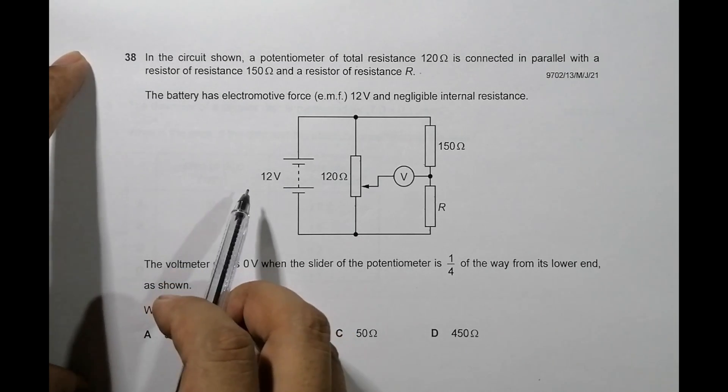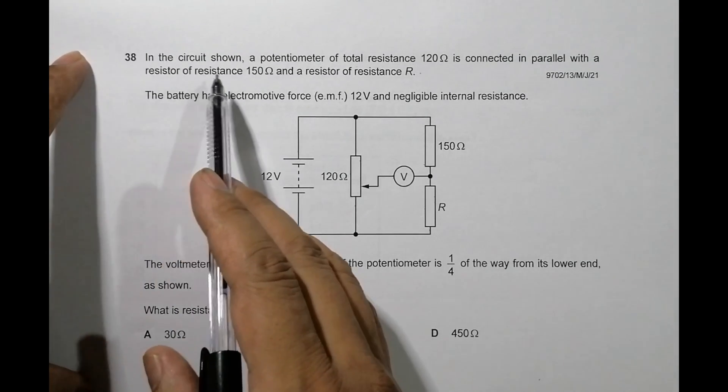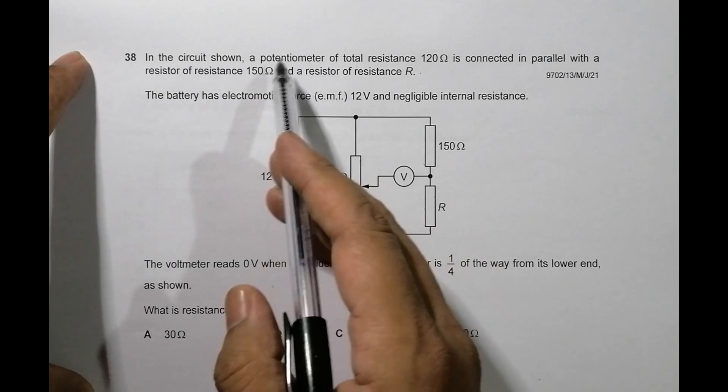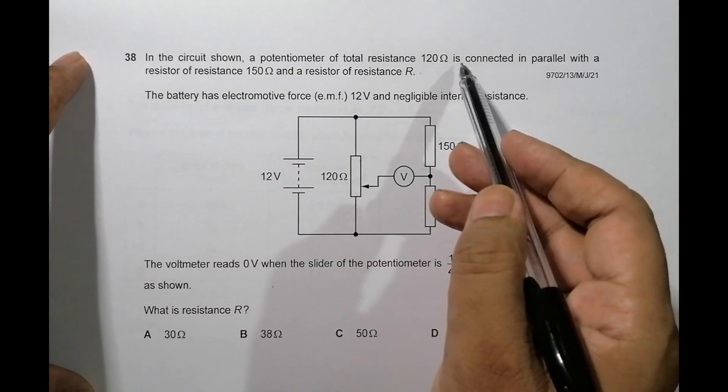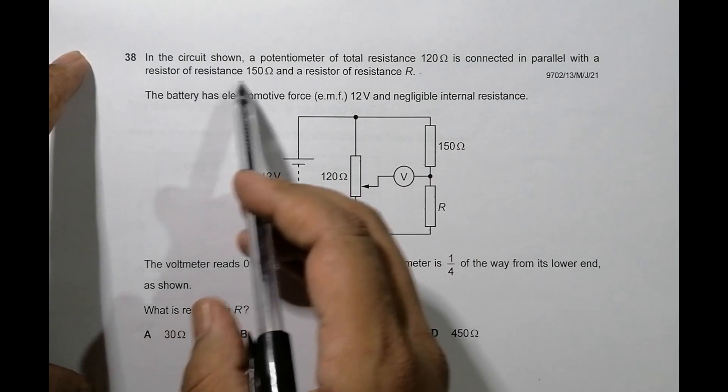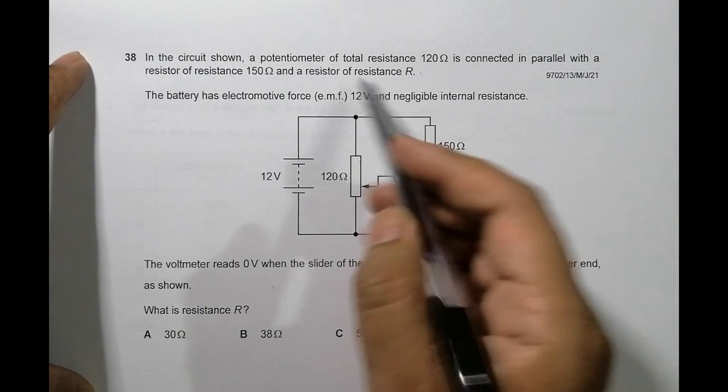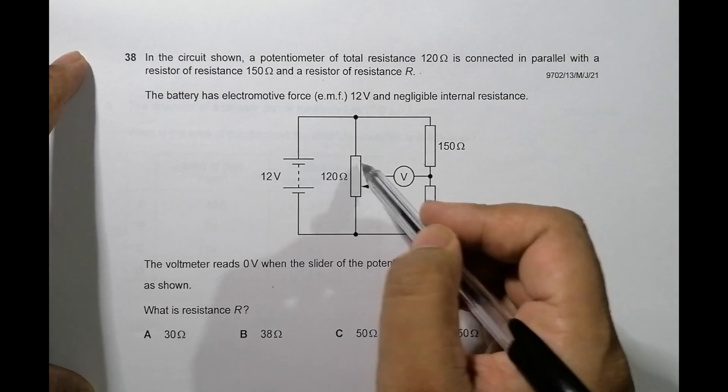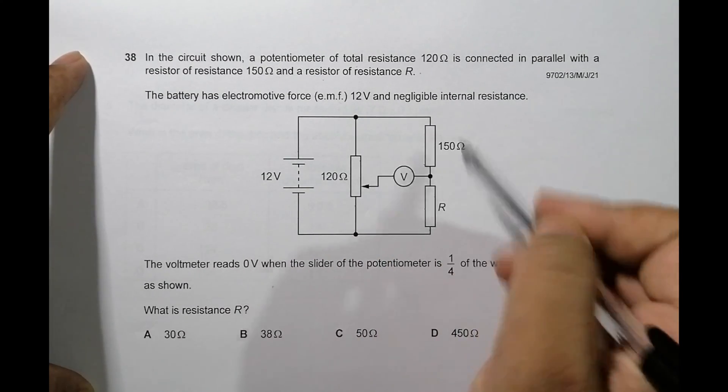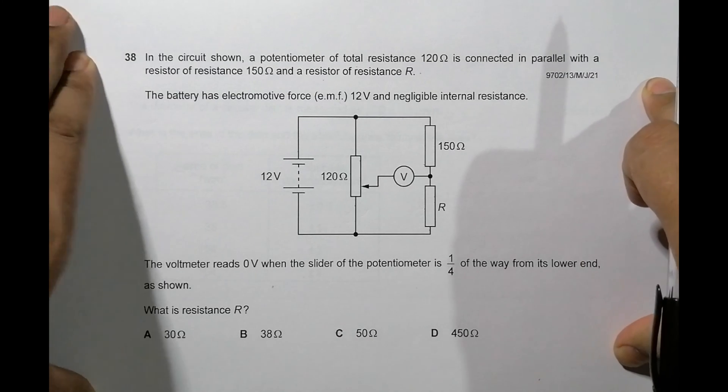It's concerned with the chapter current electricity. The circuit shows a potentiometer of total resistance 120 ohm connected in parallel with a resistor of resistance 150 ohm and a resistor of resistance R. This is parallel with the series of 150 and R.